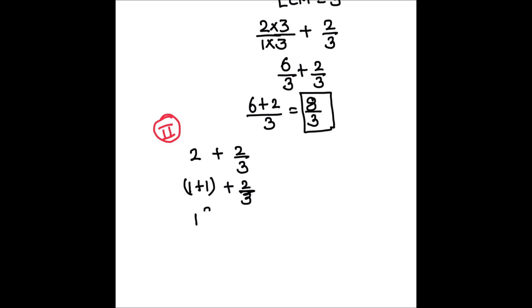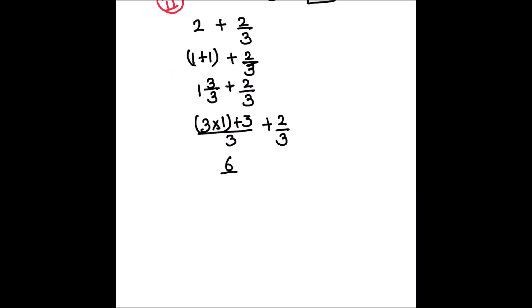And 1 can be written as 3 upon 3. Now this is a mixed fraction; we can convert this into an improper fraction. So that will be 3 times 1 plus 3, divided by 3, plus 2 upon 3. This gives us 6 upon 3 plus 2 upon 3, which equals 8 upon 3. This is the second method for finding the value of this fraction addition.